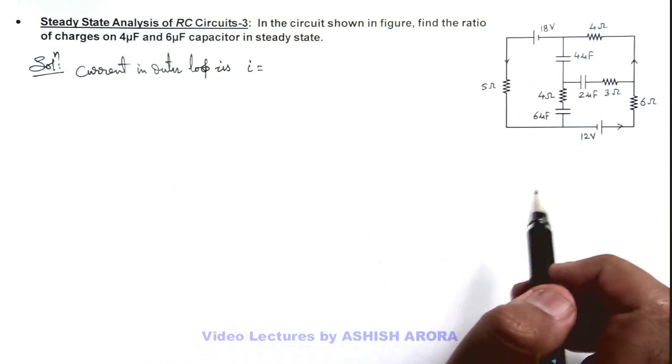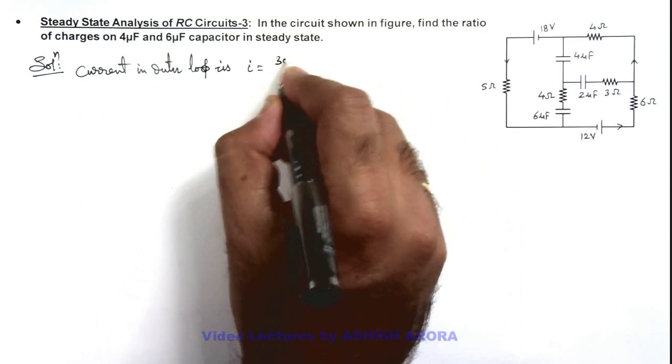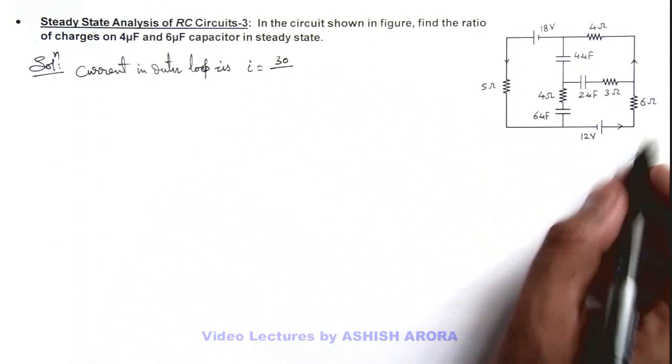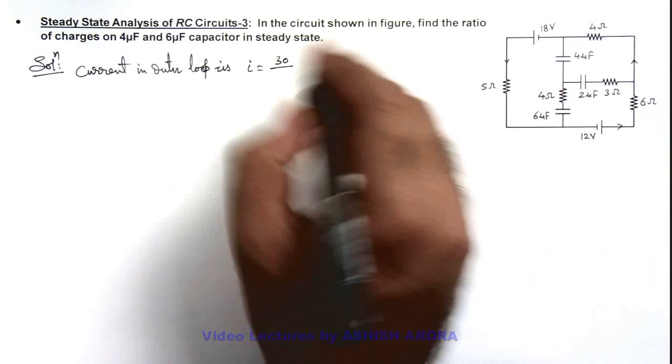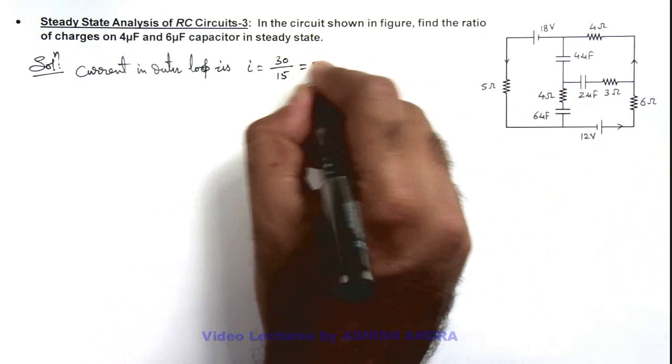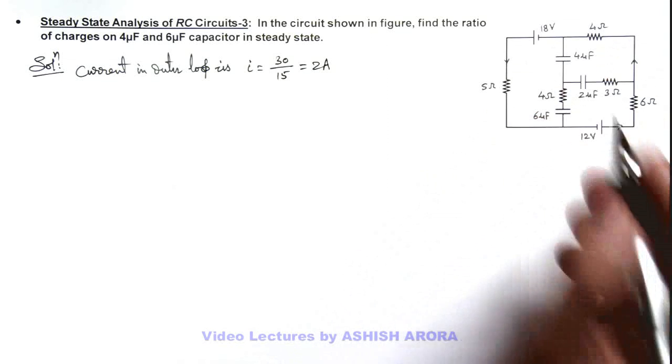So this is 30 divided by the total resistance of this loop is 15 ohms. So this will be 2 ampere, so current 2 ampere is flowing through it.